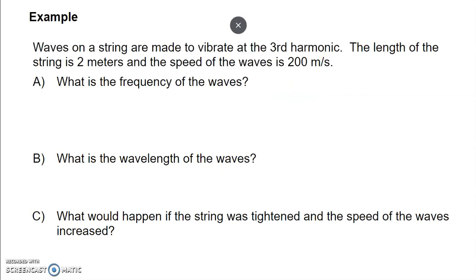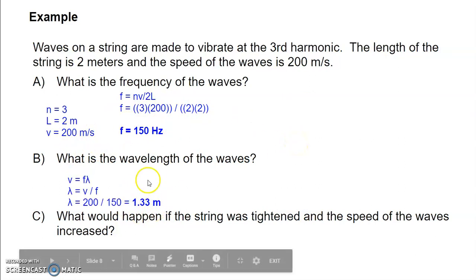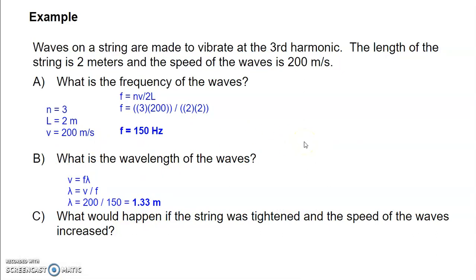Sample problem: waves on a string vibrate at the third harmonic; the string length is 2 meters and wave speed is 200 m/s — what is the frequency? Givens: n = 3, L = 2 m, v = 200 m/s. Using f = nv / 2L: (3 × 200) / (2 × 2) = 600 / 4 = 150 Hz. Then wavelength = v / f = 200 / 150 = 1.33 meters.